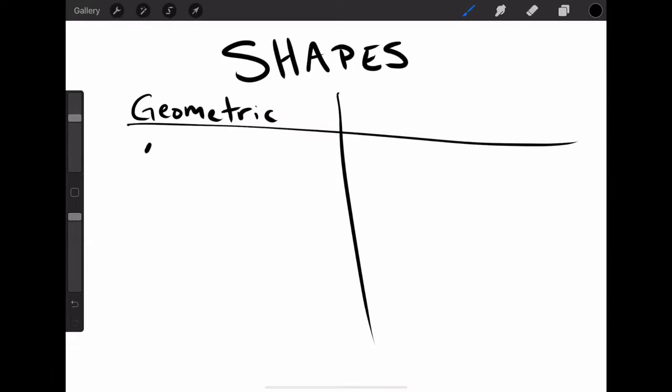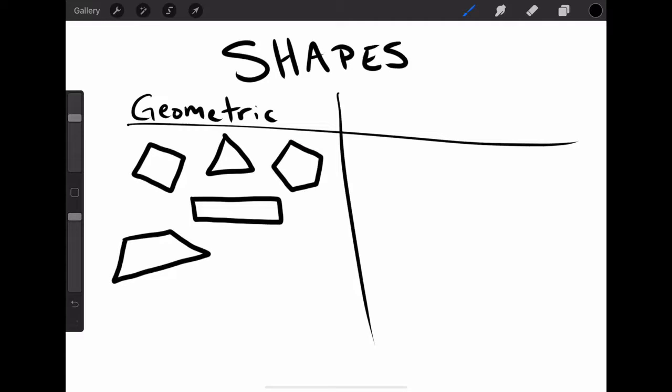Geometric shapes are shapes that are defined by math. They are those classic shapes that you see all the time - usually ones with straight edges and angles. Think about squares, rectangles, triangles, trapezoids. I'm drawing these a little wobbly, but you get the point. Anytime you have a shape with straight edges and angles, it is going to be a geometric one.